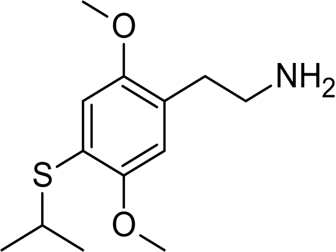2-CT4, 2,5-dimethoxy-4-isopropylthiophenethylamine, is a psychedelic phenethylamine of the 2-C family. It was first synthesized by Alexander Shulgin and is used as an entheogenic recreational drug.